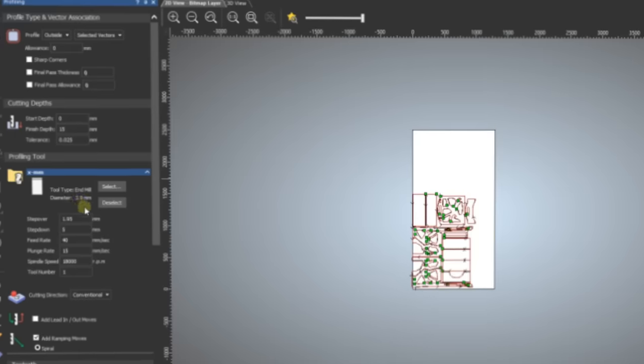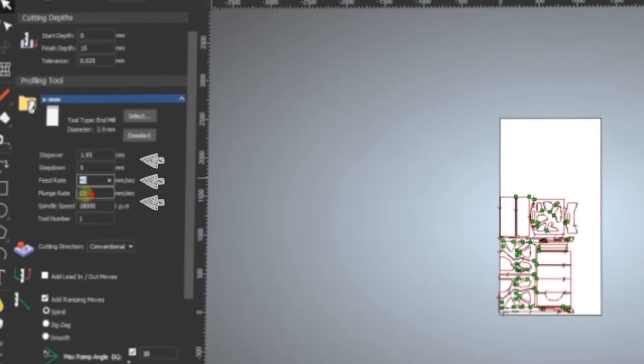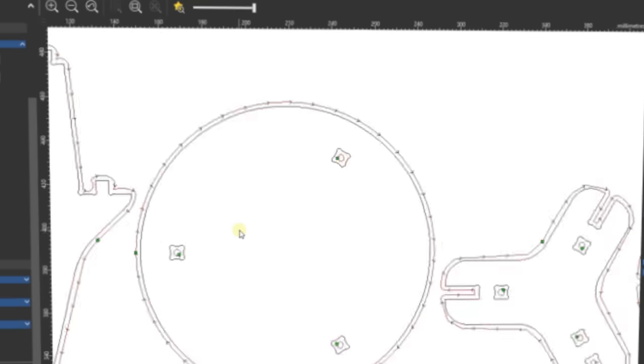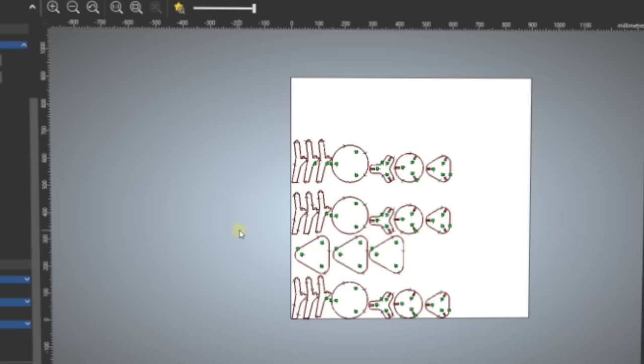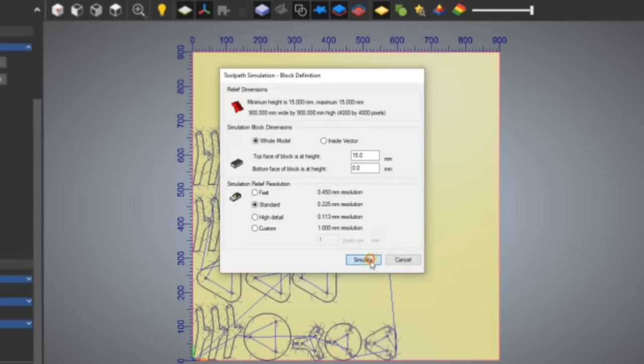The next step is to convert the finished drawing into G-code, a set of commands understood by the machine tool's control system. The G-code tells the machine what spindle speed to use, at what speed, depth, and in what coordinates to move the cutting tool.